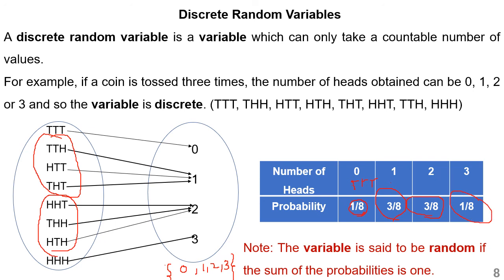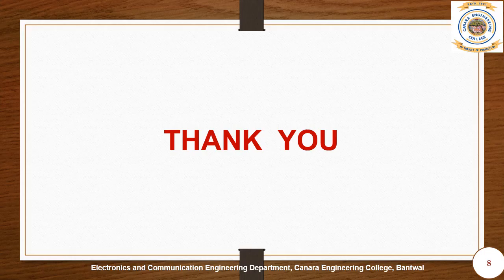This is the probability table we have formed. The very important observation is that if we add up all the probability values — 1/8 plus 3/8 plus 3/8 plus 1/8 — this results in 8/8, which equals 1. So this is a very important observation: the variable is said to be random and the sum of the probabilities is equal to one. Thank you. In the next video, we study more on probabilities as well as probability mass functions.